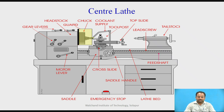This is the center lathe, in which the entire setup is fixed on rigid legs. On the legs, a rigid bed is present that is made up of cast iron. On the lathe bed, we have the headstock and tailstock. On the headstock, we fit a chuck inside which the job is held. The motion is given to the chuck by the speedcone pulleys, and that is also called as live center. At the opposite end there is a tailstock. Between these two, the job is held and operations are performed.